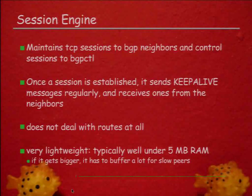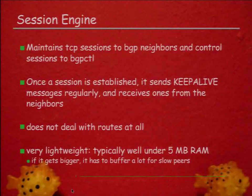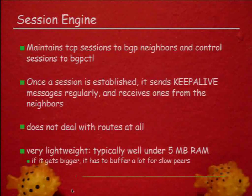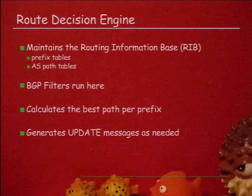The session engine maintains the sessions and makes sure they never drop. Once a session is established, it takes care of keepalive handling — receiving keepalives from neighbors, and dropping the connection if it doesn't see them. It runs a bunch of timers. It does not deal with routing or route messages at all — it just passes those on. It is very lightweight; typically it consumes less than 5 megabytes of RAM. If you see it consuming more memory, that means one of your peers is very slow and it's buffering a lot. That typically means you are talking to a Cisco. I mean, if you are spending 200,000 euros on a router, you cannot expect to get a CPU worth more than $2.